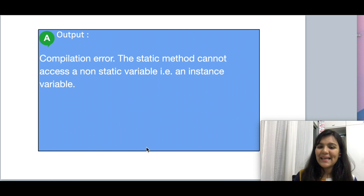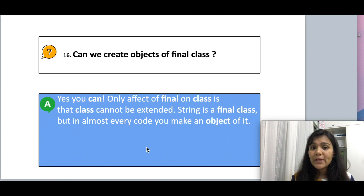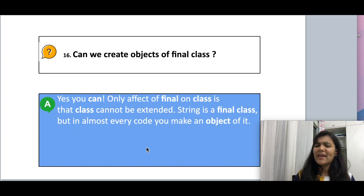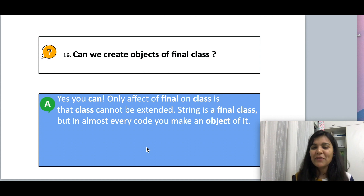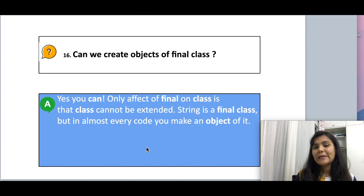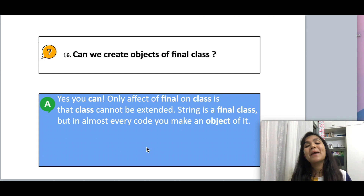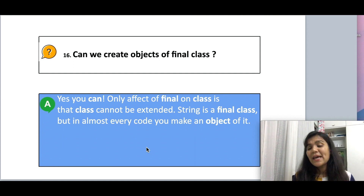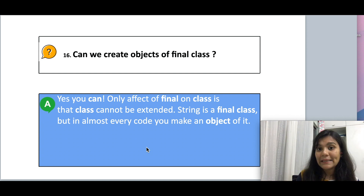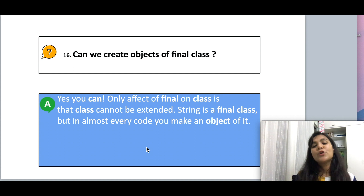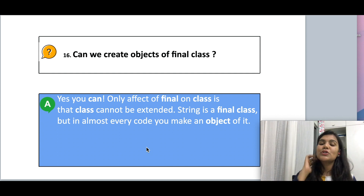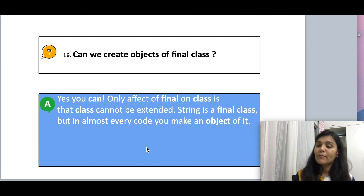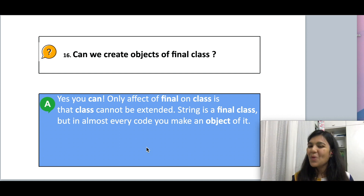Moving on to the next question: can we create objects of a final class? Yes, you can definitely create objects of a final class. Adding the final keyword only prevents the class from being extended — it does not mean you cannot create objects of it. A simple example is the String class, which is final because we don't want users to provide their own implementation, but we still create String objects all the time.